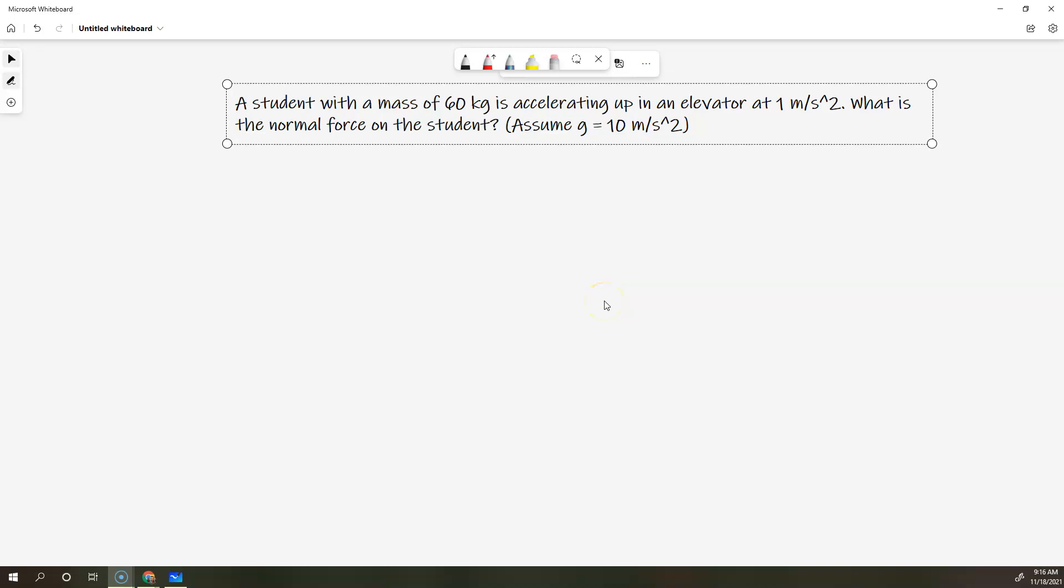Okay, let's do a quick example problem. A student with a mass of 60 kilograms is accelerating up in an elevator at 1 meter per second squared. What is the normal force on the student? We're going to assume that the acceleration due to gravity has a magnitude of 10 meters per second squared.